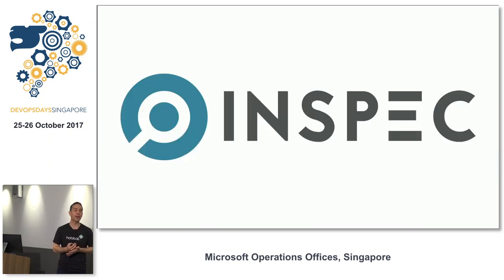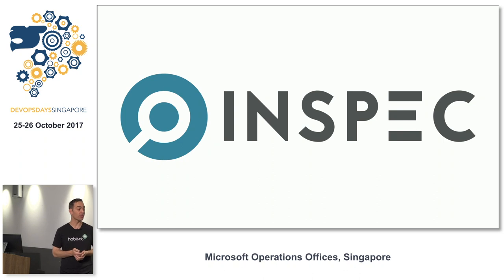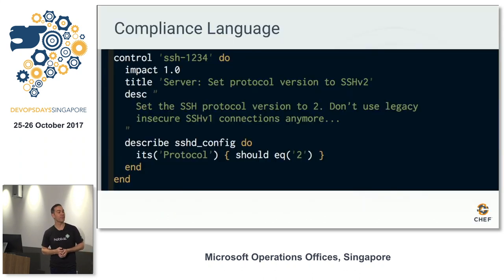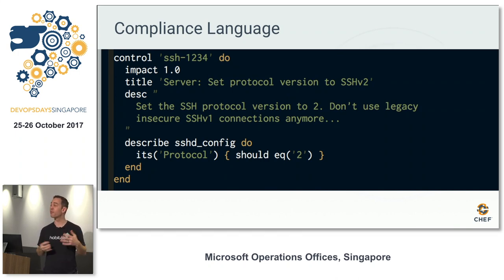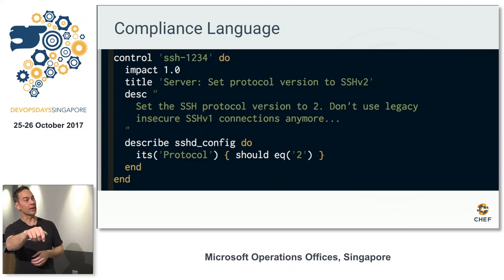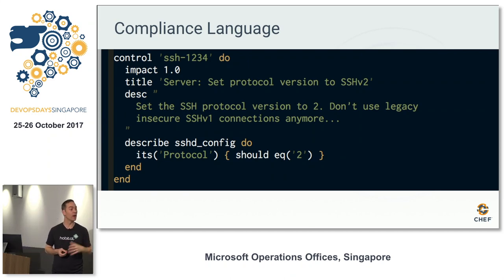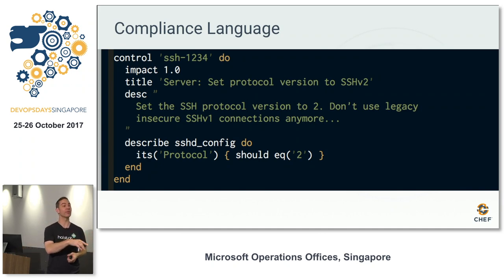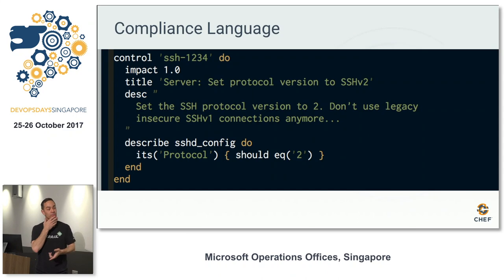That's what we're going to talk about now. InSpec is an open source project from Chef, Apache licensed. It is a compliance language based off the spec style of testing. If you're familiar with unit testing, spec is a style of very human-readable format. Down at the bottom we're describing the SSH configuration we want to see — we want the protocol, it should equal two.